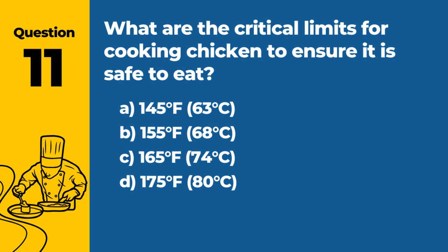Question 11. What are the critical limits for cooking chicken to ensure it is safe to eat? The answer is C: 165°F (74°C). Cooking chicken to this internal temperature kills potentially harmful bacteria.